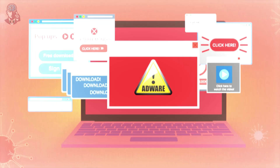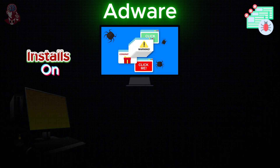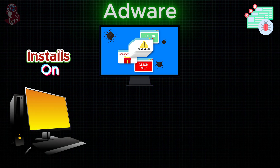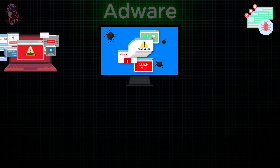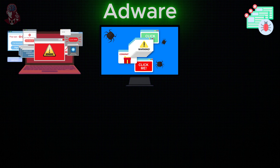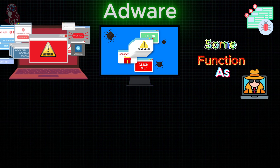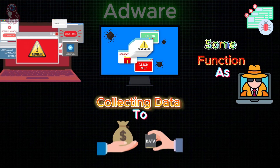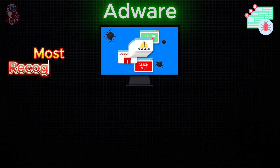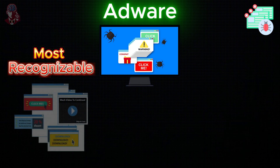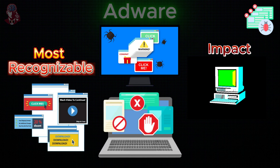Adware: Adware is a type of malware that installs itself on your system without your knowledge, often during the download of other software. It displays advertisements while the user browses the internet. Some adware programs also function as spyware, collecting data to be sold or used for targeted advertising. The most recognizable adware often opens unclosable pop-up windows. Impact: slows system performance.